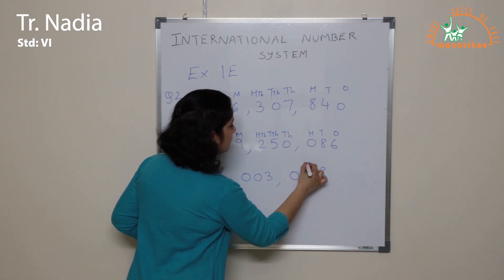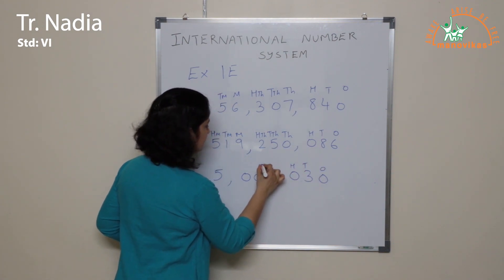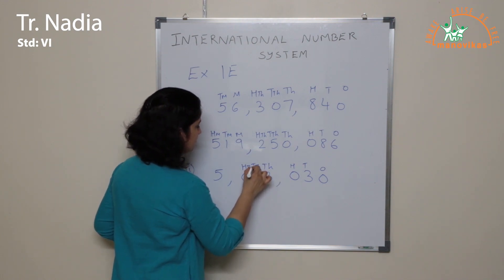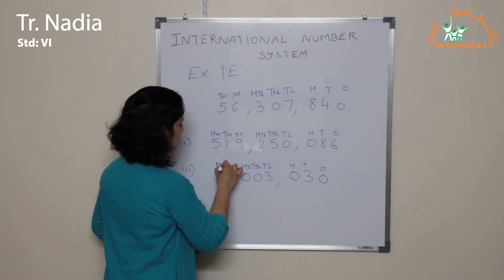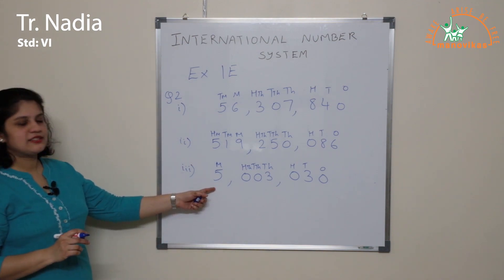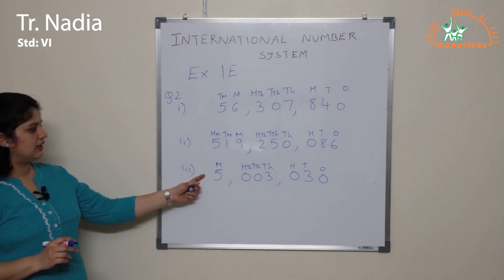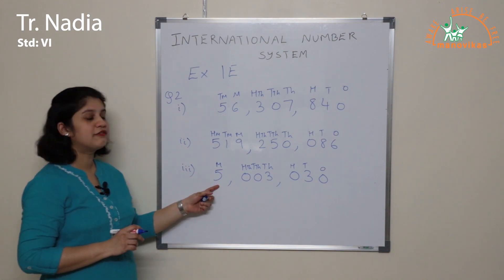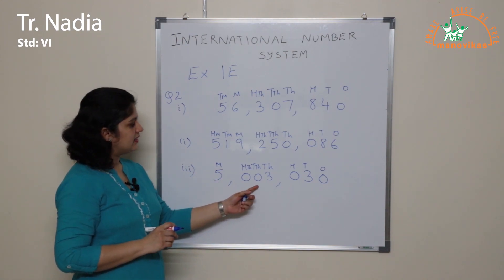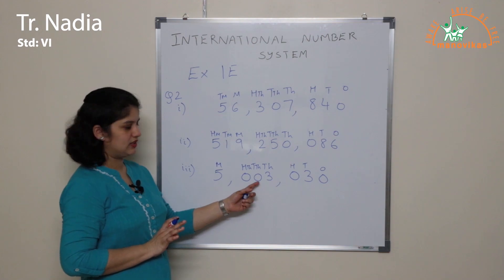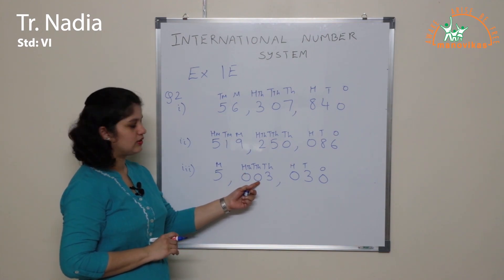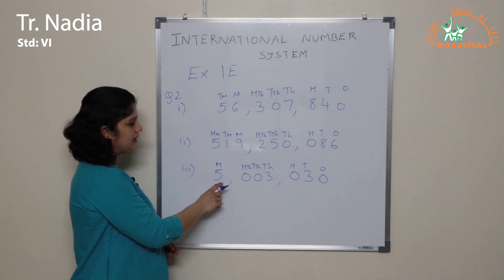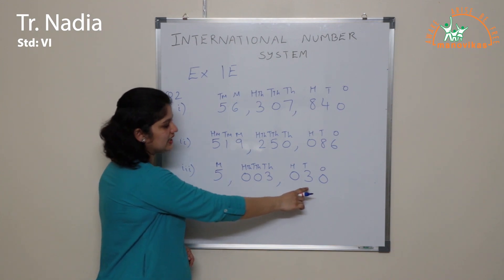The third example: there is a 5 in the millions place, and no digit in the 10 million or 100 million place, so we read it as 5 million. In the thousands, we have 3 thousand, with no digit in the 100,000 or 10,000 place. So the number is read as 5 million, 3,030.